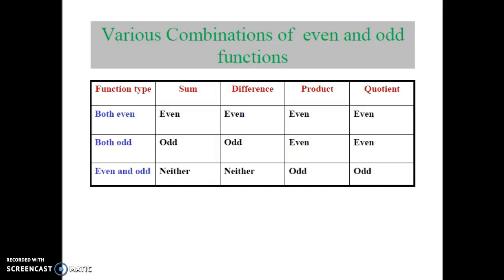Now let us see the various combinations of even and odd functions. If we have both signals as even signals and perform the sum operation, then the resultant signal is even. If we perform the difference operation on both even signals, the resultant signal is also even. If we perform the product of both even signals, then the product is also even.